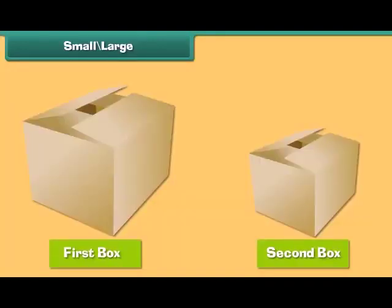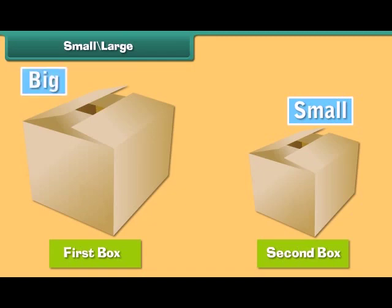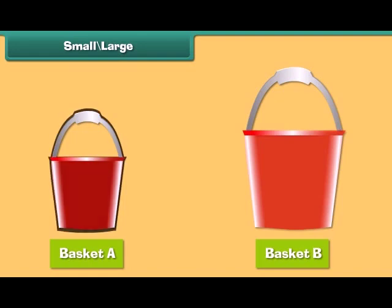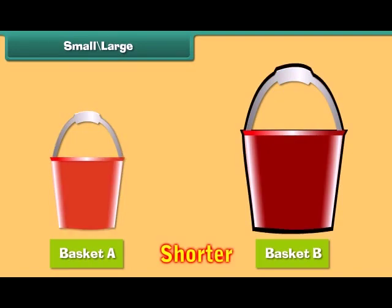We see two boxes but they are of different sizes. When two things are not of the same size, we compare them. We use the word small with the object which looks shorter, and the word big with the object which is larger. Basket A is shorter than basket B.